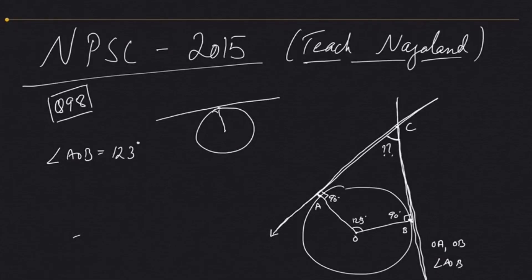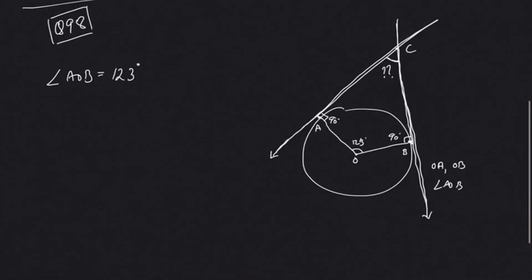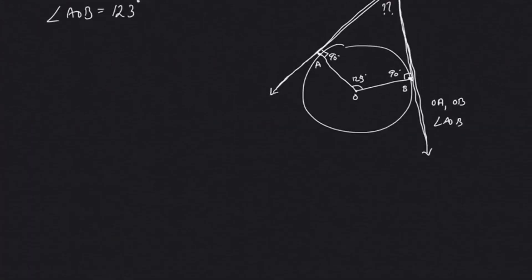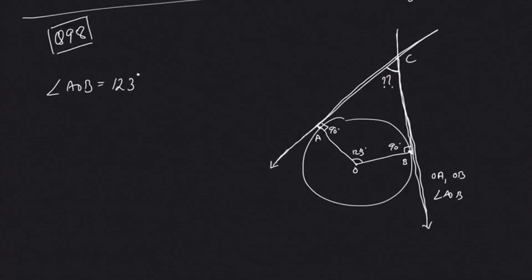The question is to find out the angle between the tangents. These are the two tangents at the two radii at the end points of contact. Again, it's about your concept. If you're preparing for NPSC, when you have sufficient time, please go through the class 7, 8, 9, 10 mathematics textbooks. At least the basic stuff—it'll really help you solve problems better.